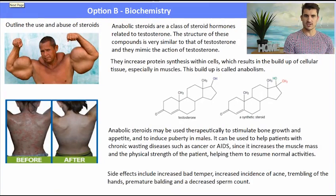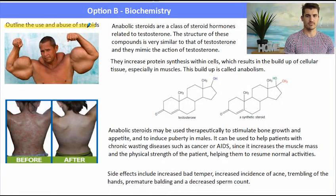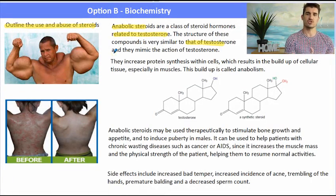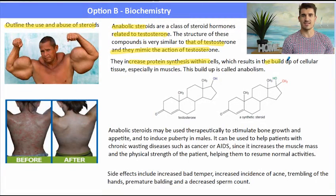We also need to talk about the use and abuse of steroids and there's sort of two uses for it and there's also abuse. So anabolic steroids are a class of steroid hormones related to testosterone. Their structure mimics the structure of testosterone and it does the same thing in the body.